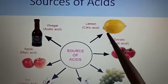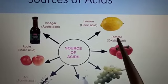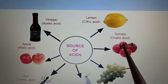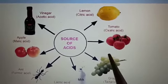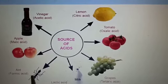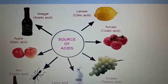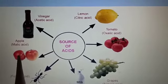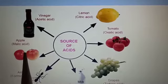In lemon, citric acid is present. Tomato has oxalic acid. Grapes have tartaric acid. Milk has lactic acid. Ant sap has formic acid. Apples have malic acid.